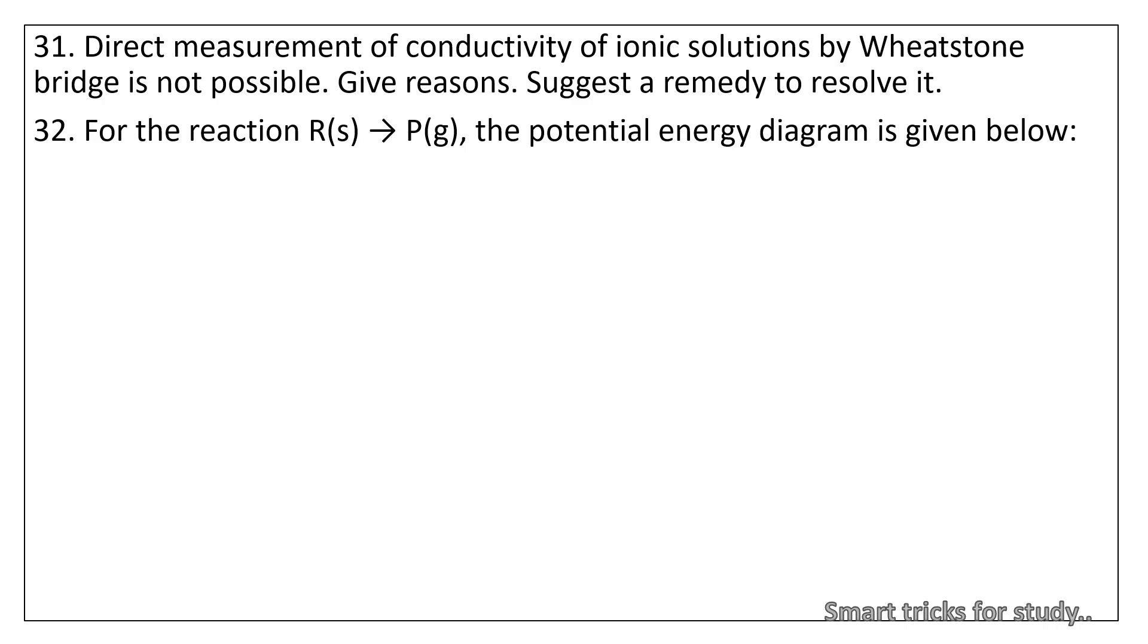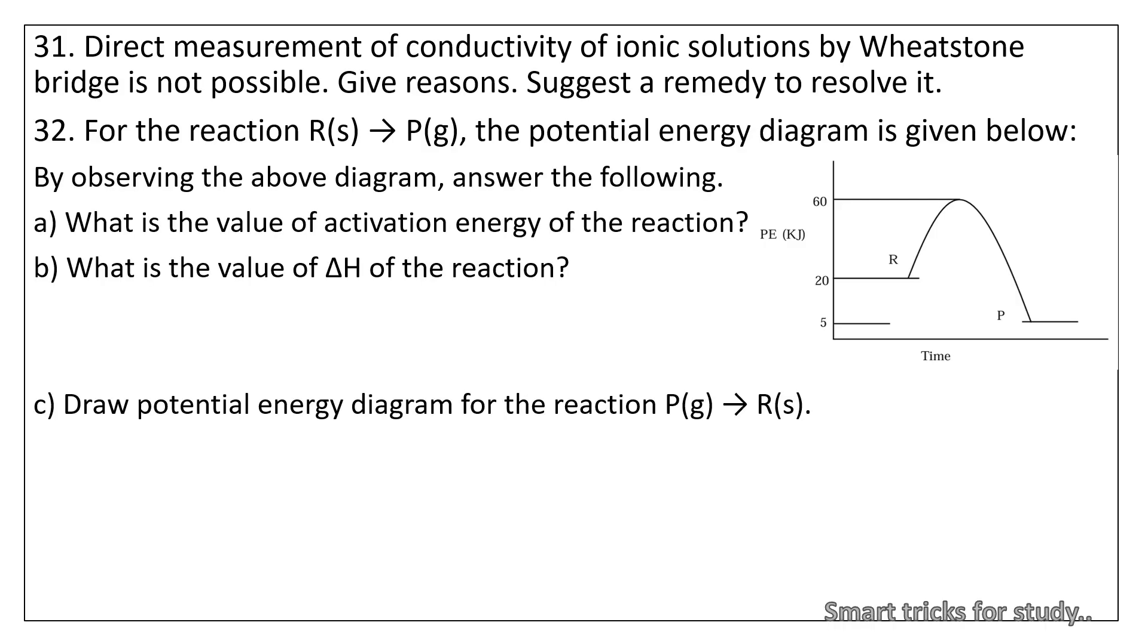32. For the reaction R + S gives P + G, the potential energy diagram is given below. By observing the above diagram, answer the following: A. What is the value of activation energy of the reaction? B. What is the value of delta H of the reaction? C. Draw potential energy diagram for the reaction P + G gives R + S.